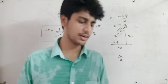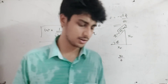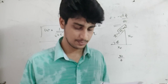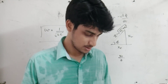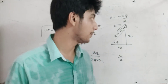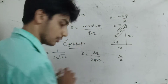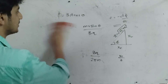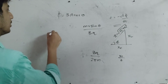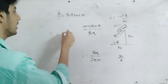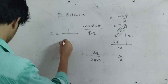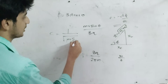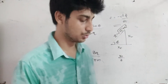EM waves are good. If you want to see it, c is equal to 1 by root μ₀ε₀. Now let's see.